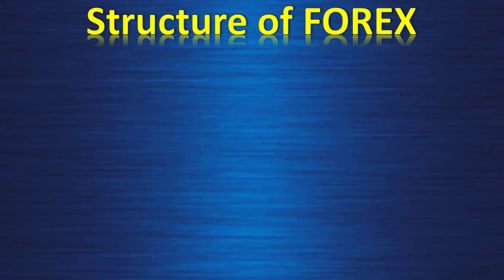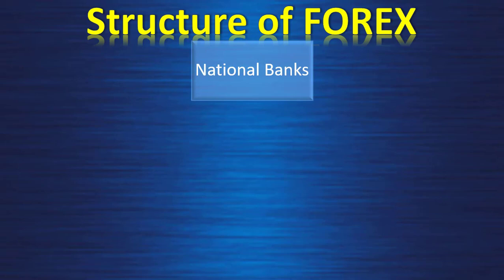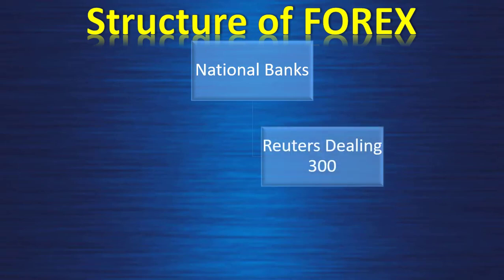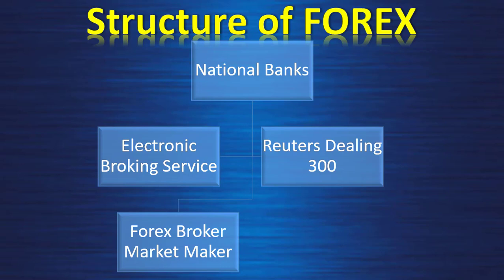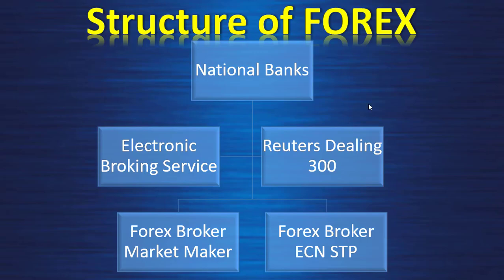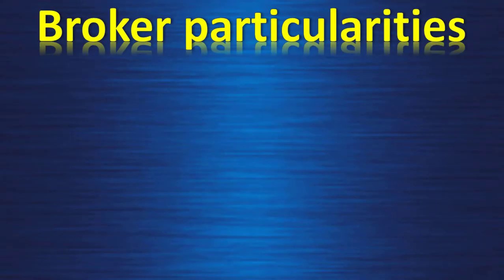At the top of the forex structure we have the national banks — they create a network between themselves. Then you have the Reuters Dealing 3000 and the Electronic Broking Service. Those two actors connect buyers and sellers in the market. Just below you have the forex broker market makers and the forex broker ECN/STP brokers.